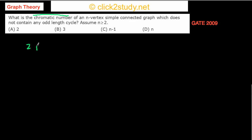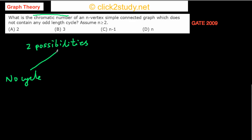We are given an n-vertex simple connected graph that does not contain any odd-length cycle. This means there are two possibilities: either the graph contains no cycle at all, or it contains only even-length cycles. The first possibility is that there is no cycle in the graph, because then it trivially contains no odd-length cycle.